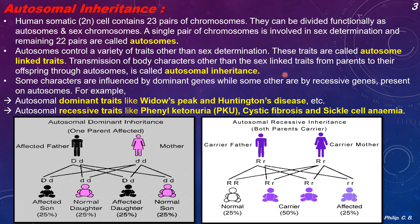The 22 pairs of autosomes carry different characteristic traits other than sex determination, which is done by the single pair of sex chromosomes. These traits are passed on from parents to their offspring — examples include widow's peak, dimples on the cheek or chin, and free or joined earlobes. Some characteristics are influenced by dominant genes while others are influenced by recessive genes present on autosomes. Dominant traits are expressed, while recessive ones present in the autosome are suppressed.